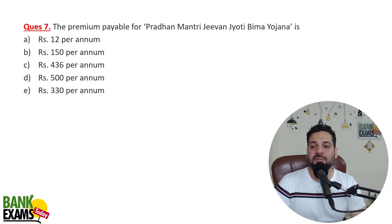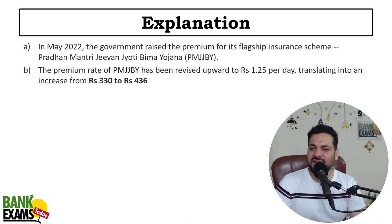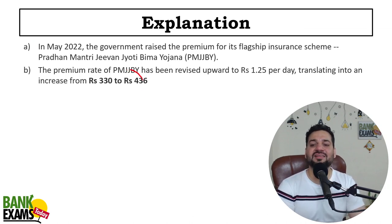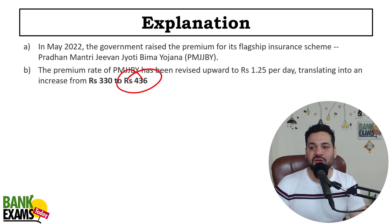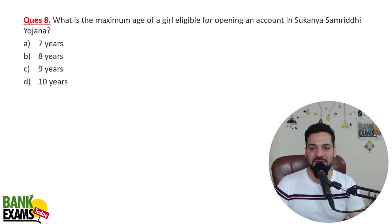The premium payable for Pradhan Mantri Jivan Jyoti Bima Yojana — yeh 330 rupay hua karta tha, lekin recently isko update karke 436 rupay kar diya gaya hai. So yeh flagship insurance scheme hai — Pradhan Mantri Jivan Jyoti Bima Yojana — 436 rupay iska premium hai.